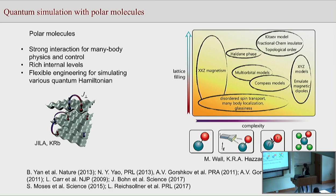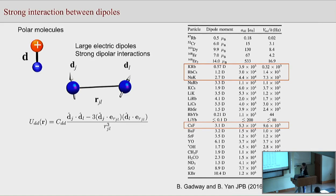Apart from that, most of this landscape has remained unexplored experimentally. It is also interesting to note that on the very right side there is a prospect for emulating magnetic dipoles using polar molecules, where we need to use a more complicated level structure. The key ingredient for all these applications is the strong dipolar interaction enabled by the large electric dipole moment of polar molecules, and for typical experimental conditions the lattice spacing allows for an energy scale on the order of several kilohertz.